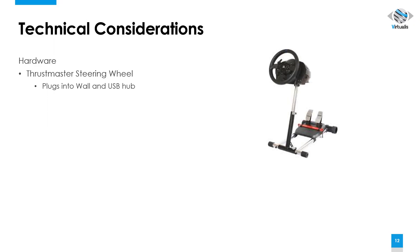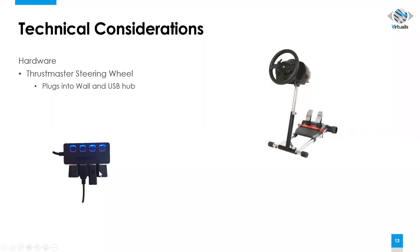This device plugs into the wall as well as to the USB hub. So that four-station hub, if set up, would see two tracker USB dongles, the Xbox USB dongle, as well as the Thrustmaster dongle.